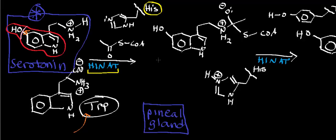What exactly is biosynthesis? Essentially, we're taking everyday molecules found around the cell — like acetyl-CoA, S-adenosylmethionine, ATP, and things like that — and making various modifications, putting building blocks together to make more complicated molecules like serotonin and melatonin. To get from serotonin to melatonin, we'll need to make modifications including an acetylation by acetyl-CoA and a methyl transfer using S-adenosylmethionine.